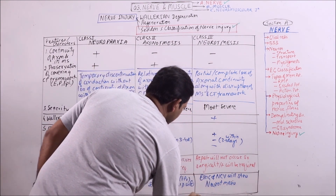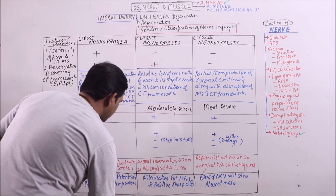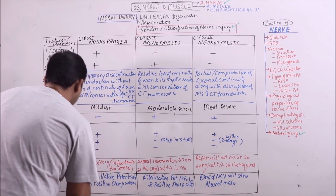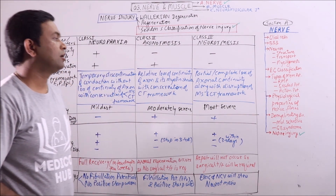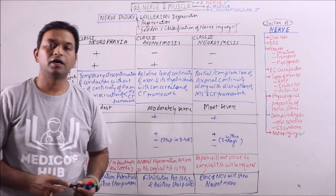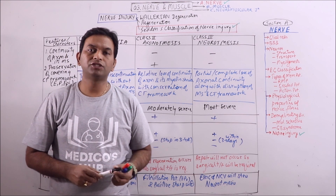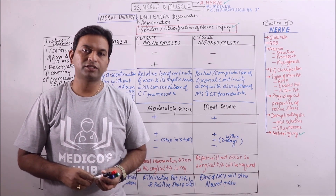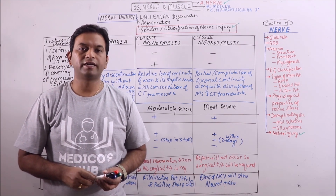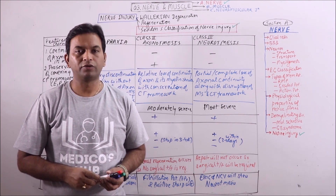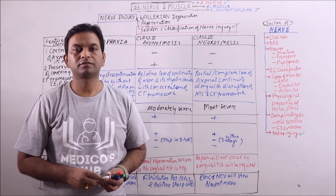So this is the Seddon's classification of nerve injury. Hit the like button, share, and subscribe to our channel to get the latest updates and notifications.